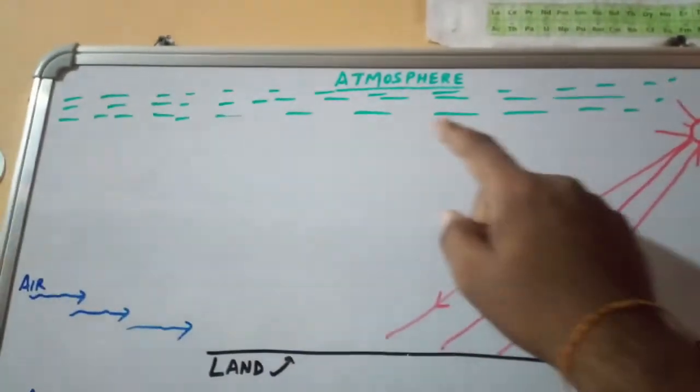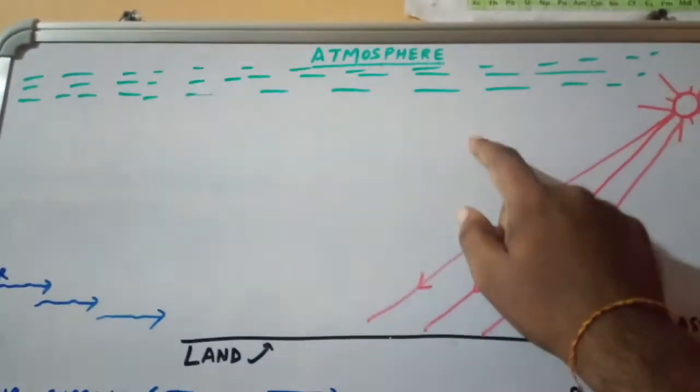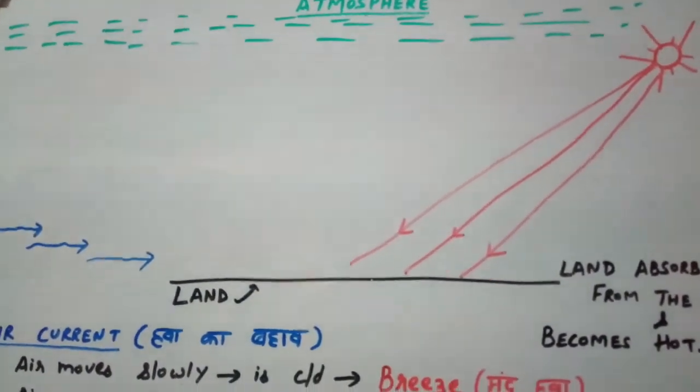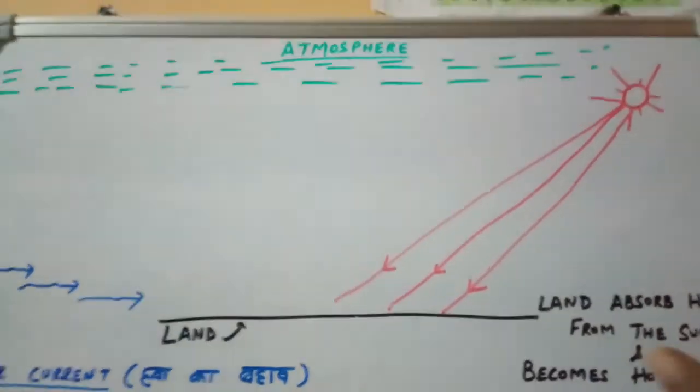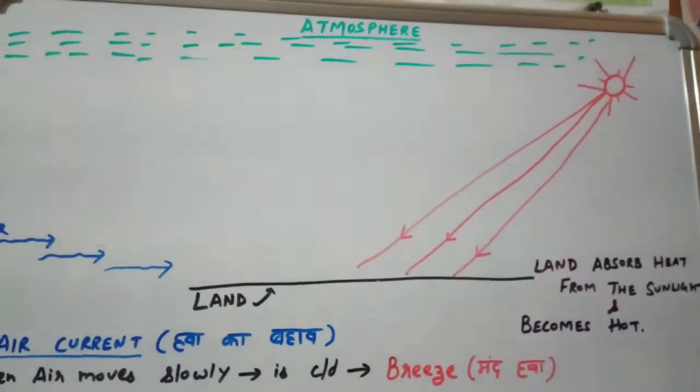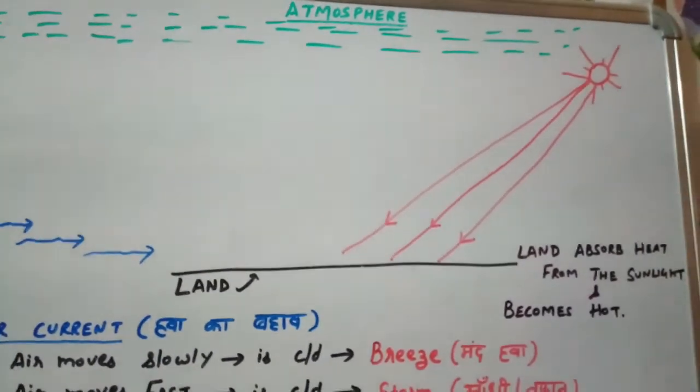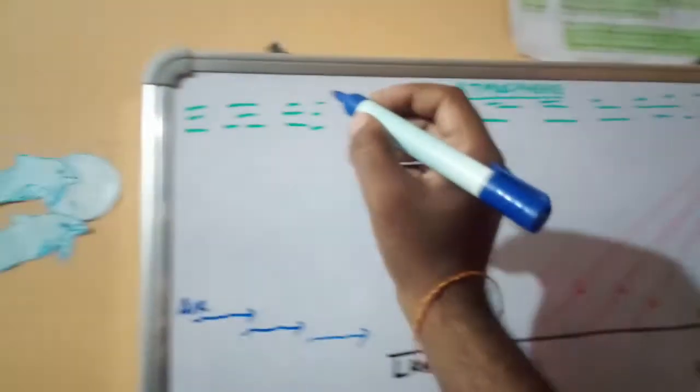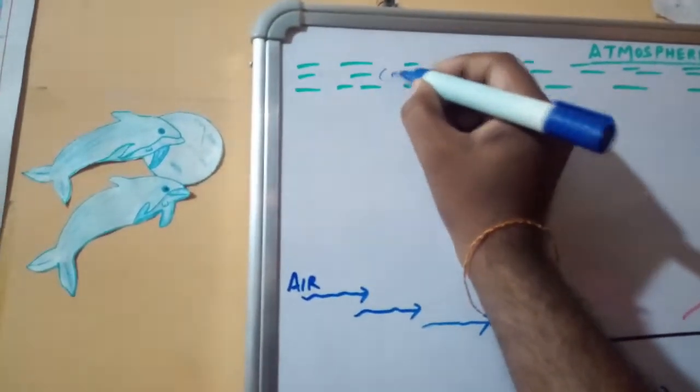Whereas in the atmosphere, the atmosphere cannot absorb that much heat as compared to the land. So therefore the temperature on the atmosphere is always cooler than in comparison to the temperature of land.